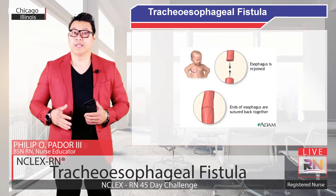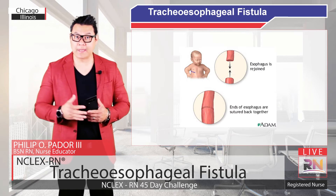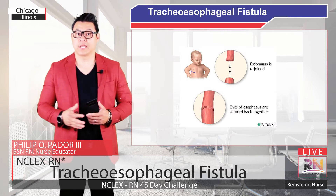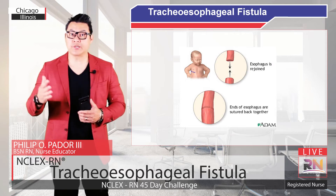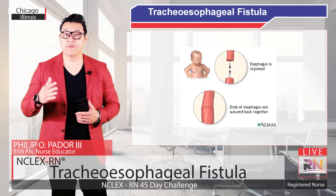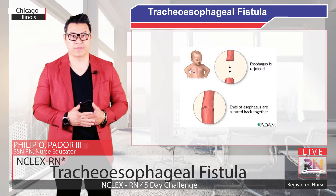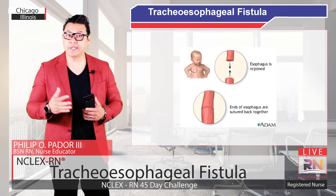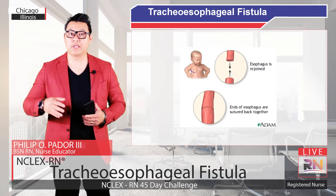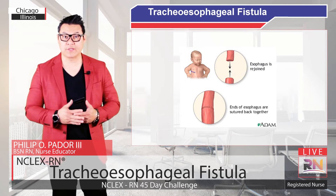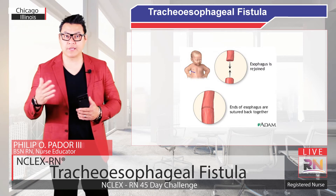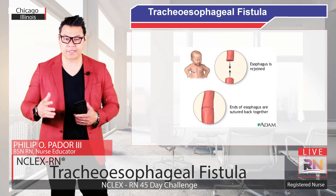The surgeon will make an incision on the baby's chest, usually on the right side. Through the incision, the surgeon will gently move the lungs aside to view the trachea and esophagus. After identifying the tracheoesophageal fistula, the surgeon will slowly close the fistula's connections to the trachea with sutures, then cut the connections away from the trachea.